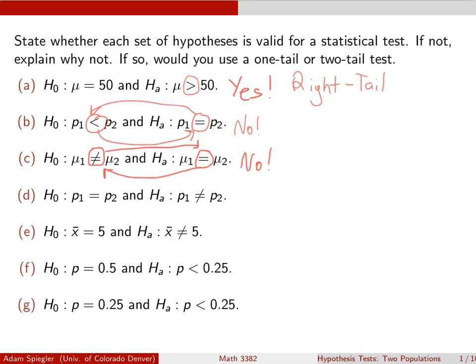For D, we're claiming in the null that P1 and P2 are equal, so there's no difference between these two populations in regards to some proportion. And the alternative is that those are not equal to each other. This is a totally valid way to set up your hypotheses. And in this case, since the alternative hypothesis has a not equal to sign, this would be a two-tailed test.